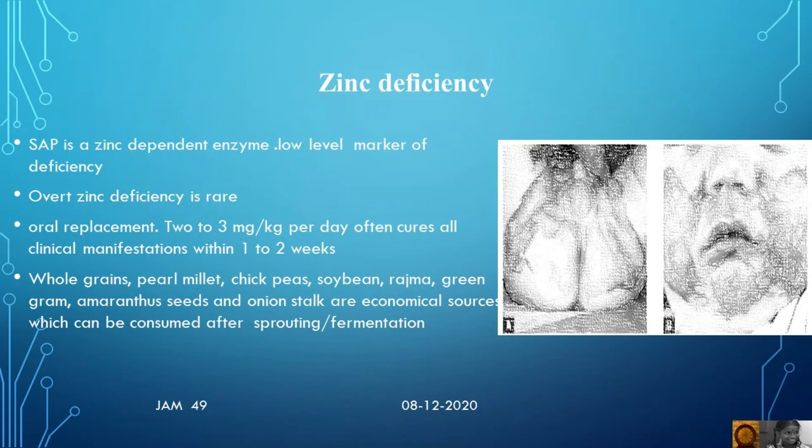Treatment is with oral replacement at two to three milligrams per kg per day, which often cures all clinical manifestations within one to two weeks. Economical food sources include whole grains, pearl millet, chickpeas, soybeans, rajma, green gram, amaranth seeds, and onion stock, which can be consumed after sprouting and fermentation.